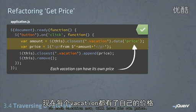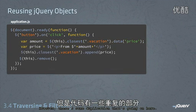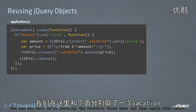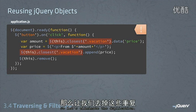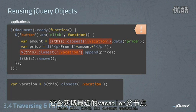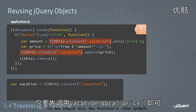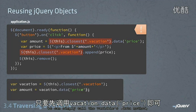However, there's some duplication going on here. You can see that we're fetching the vacation class here and then again down below, so let's eliminate this duplication. We can do this by creating a new variable called vacation which fetches the closest vacation, and then when we set the amount we can simply call that variable dot data.